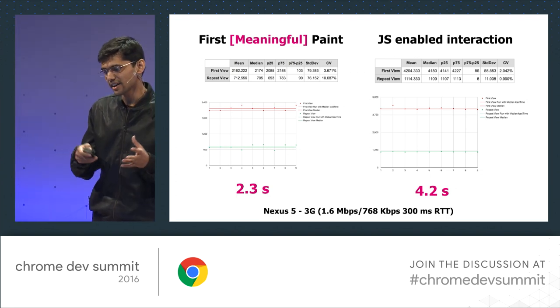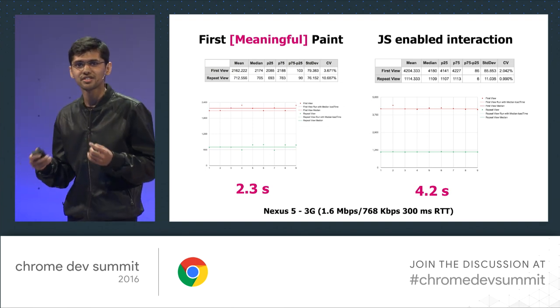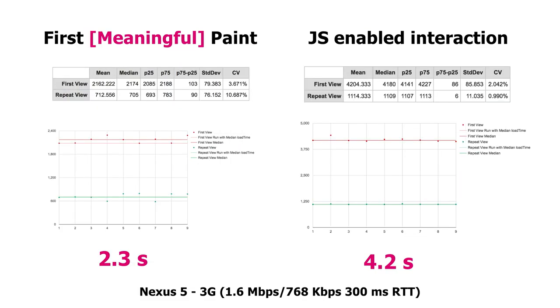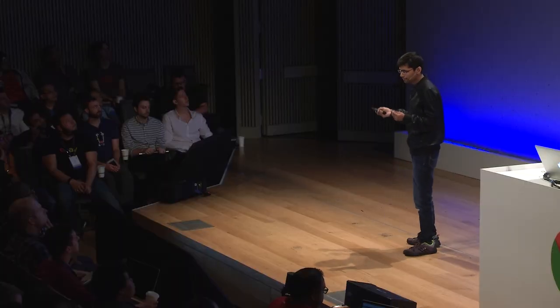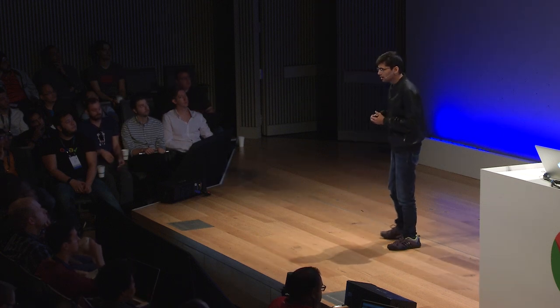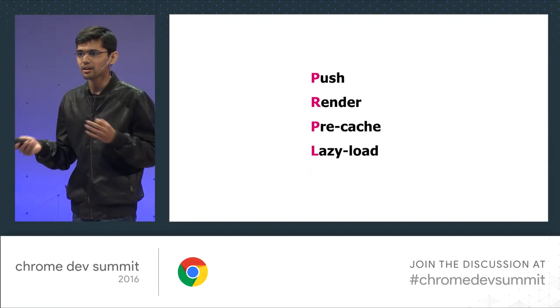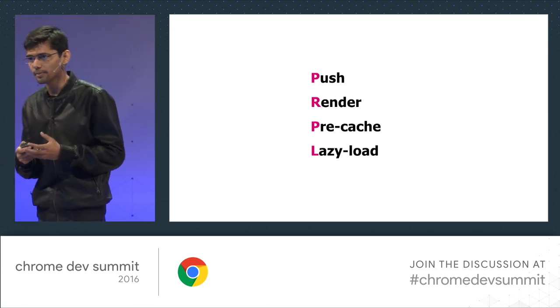After doing all this, our first meaningful paint happens at around 2.3 seconds and the first JS-enabled interaction starts at around 4.2 seconds. We've defined a custom metric calculated when the component actually mounts — since we're using React, it's the componentDidMount. We push critical resources using preload, improve render using SSR and inlining critical CSS, pre-cache assets using service workers, and lazy load resources on demand. We are very close to what the PRPL pattern promotes.